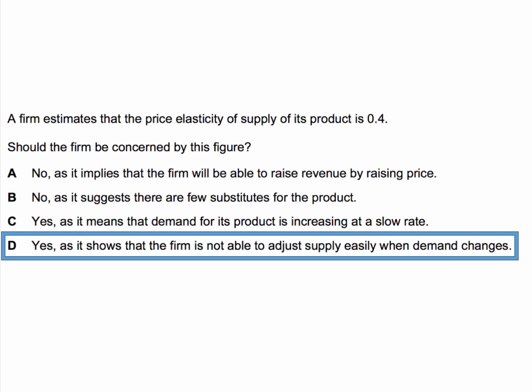Let's go through the other options first. Option A — the firm will be able to raise revenue by raising price — doesn't really relate to elasticity of supply; any change in supply will increase revenue at a higher price. Option B — it suggests few substitutes — is more to do with elasticity of demand rather than supply. Option C — that demand for its product is increasing at a slow rate — has nothing to do with elasticity of supply at all. So the answer is D.